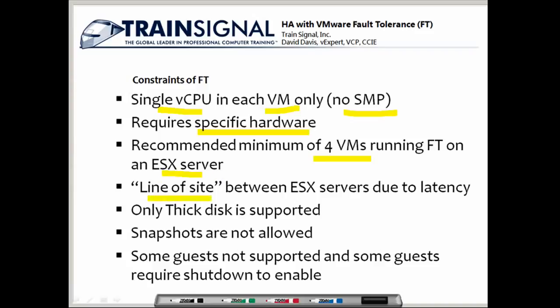The ESX servers need to be line of sight — most likely in the same room or connected with a 1Gb Ethernet link. Fault tolerance is being tested in Metro scenarios with higher latency but high bandwidth, but that's not yet a recommended scenario by VMware. Only thick disks on virtual machines are supported — you cannot use thin provisioning — and snapshots are not allowed on those virtual machines.